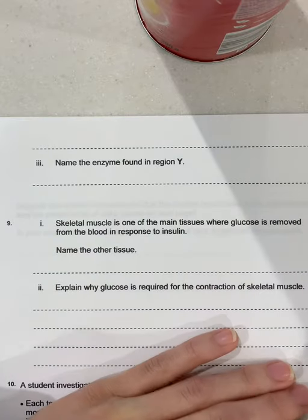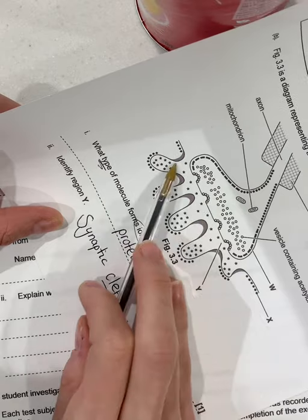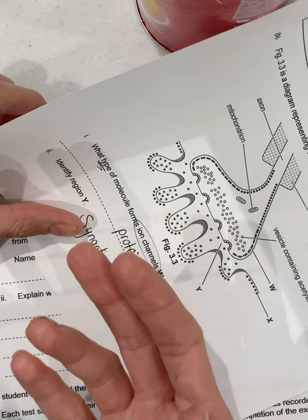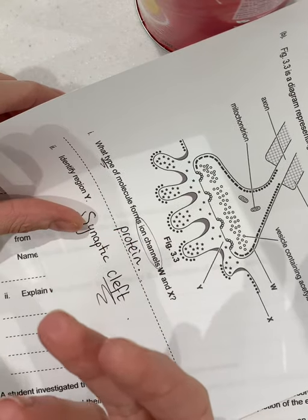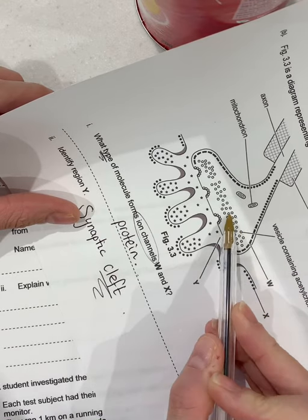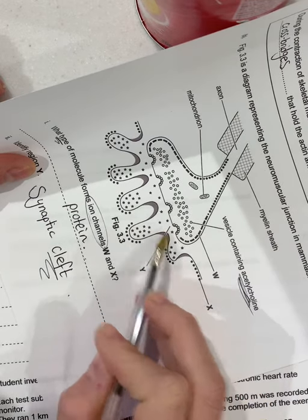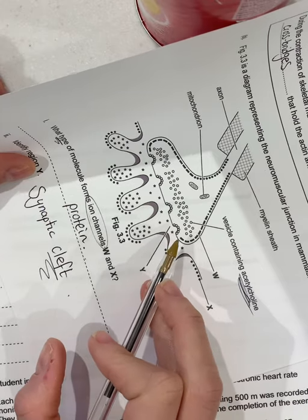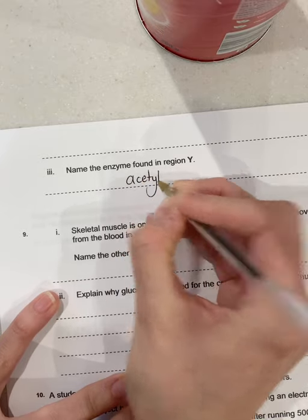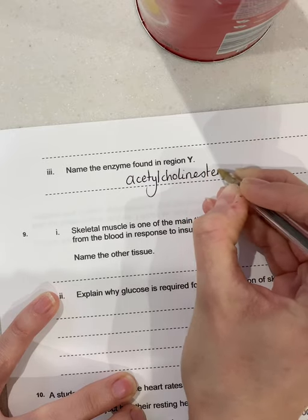Name the enzyme found in region Y. Acetylcholine is a very common neurotransmitter and we need to have the enzyme which breaks that down. Acetylcholine is the neurotransmitter and the enzyme that breaks it back down again — so it can reform the vesicles into the presynaptic terminal — is acetylcholinesterase.